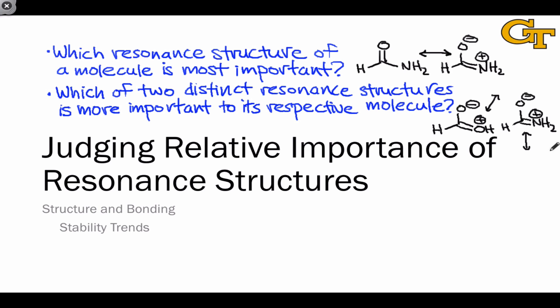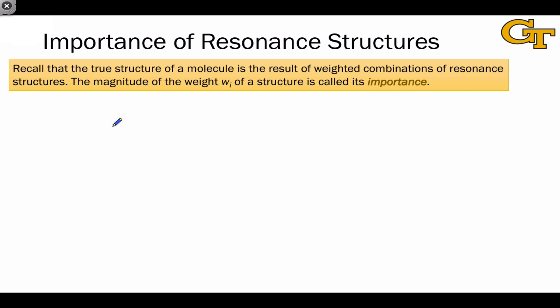By answering this question, we can address the relative properties of the formic acid and formamide molecules. Recall from our earlier discussion of resonance that what we call the true structure of a molecule, its quantum chemical structure, is the result of weighted combinations of what are called resonance structures. We can give to each resonance structure a weight, which I'm going to denote W on this slide, and what this refers to is the importance of that particular resonance structure to the true structure of the molecule.